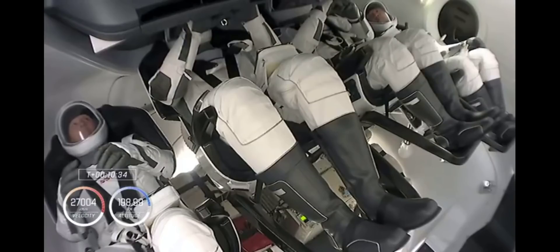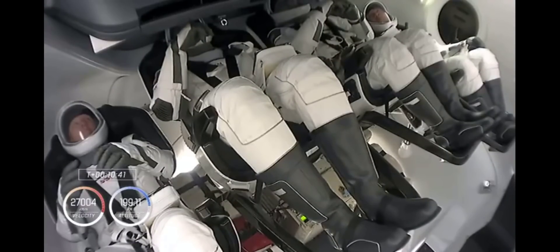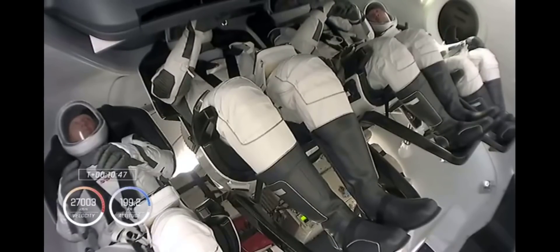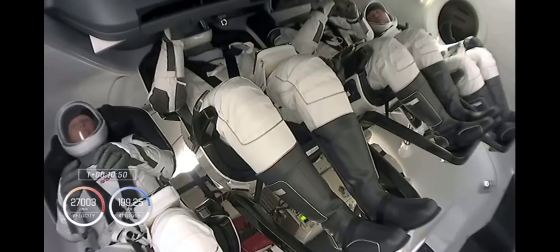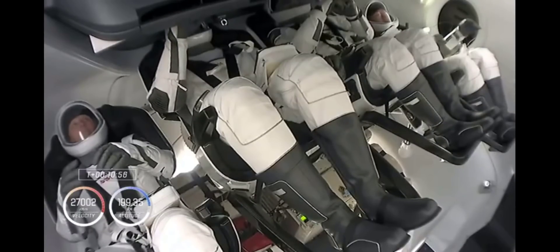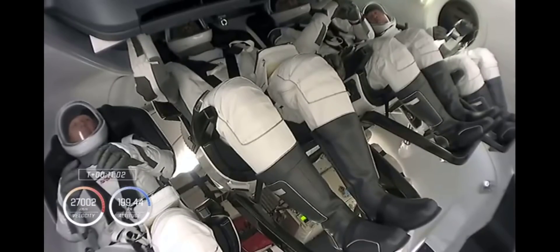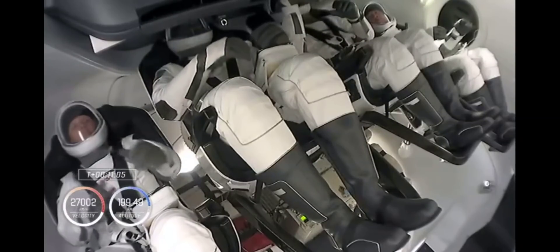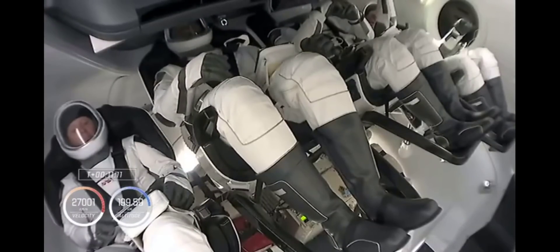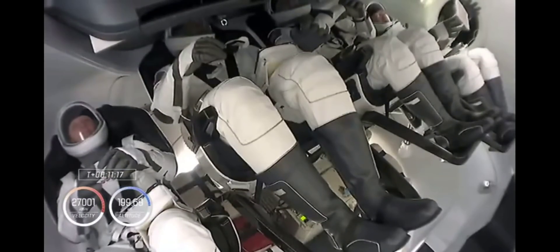The mission timer shows 90 seconds to Dragon separation. Currently, Dragon is flying at 27,000 kilometers an hour. And we're T plus 11 minutes since liftoff today, waiting on that second stage separation. But as you can see, our astronauts from left to right, Shannon Walker, Victor Glover, Mike Hopkins, and Soichi Noguchi now on their way to the International Space Station.